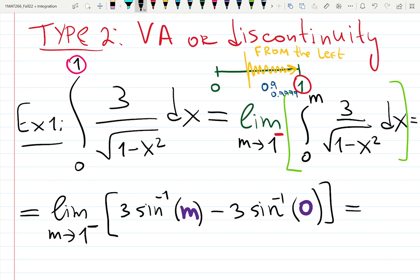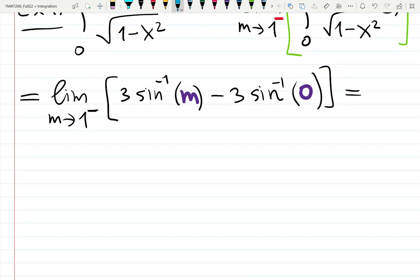What is arc sine of 0? 0. It basically asks the question, sine of what angle gives you 0? There are many of them, but on the restricted domain, it's 0.